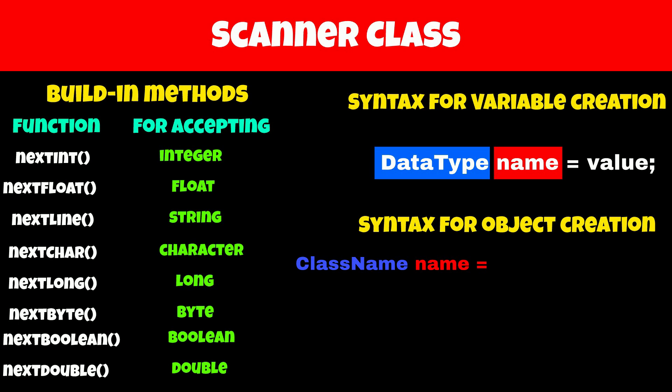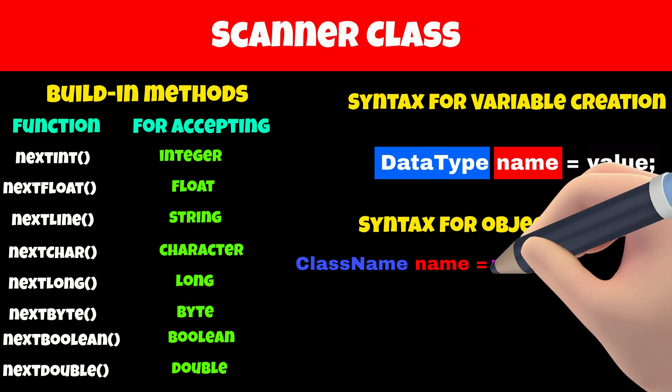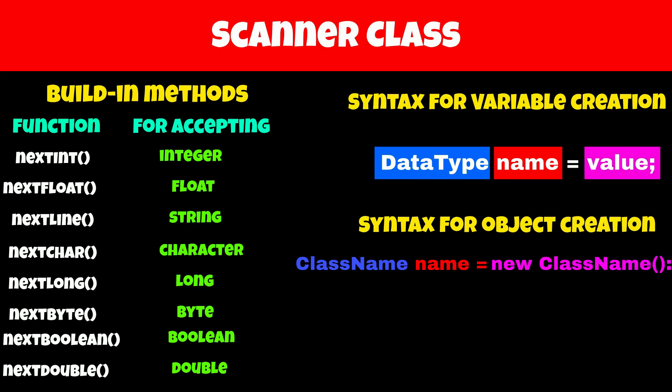Next, we have to define the value of the variable. To get the value of any object, the class has a special function whose name is similar to the class name — this function is called a constructor. We have to call this special function along with the new keyword, which helps us allocate memory for the object.